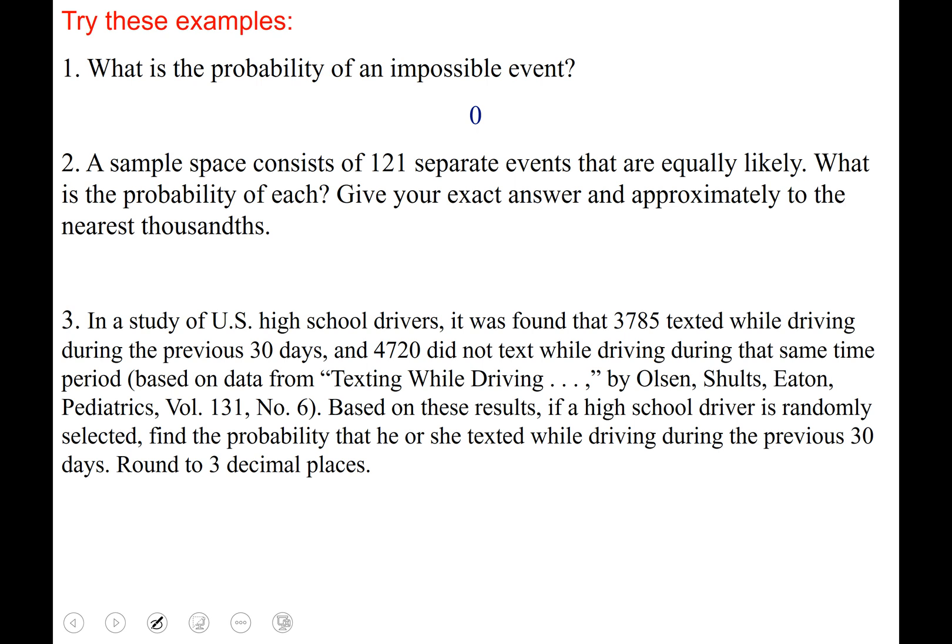Number two if you put one out of 121, approximately 0.008, you got it right. So let's walk through this one together. A sample space consists of a hundred and twenty one separate events. So that is your denominator and each of the events are equally likely. What is the probability of each event? So this is where it gets tricky. They didn't say what's the probability of one event occurring. They said each event.